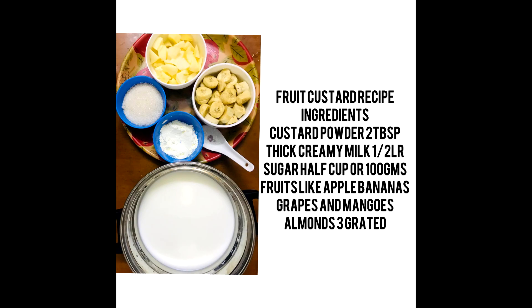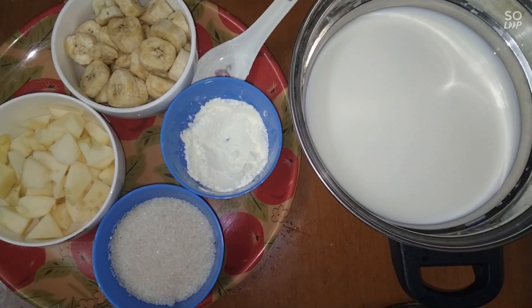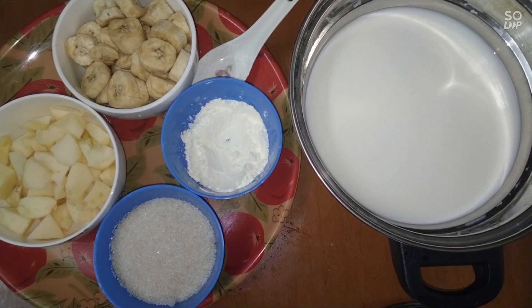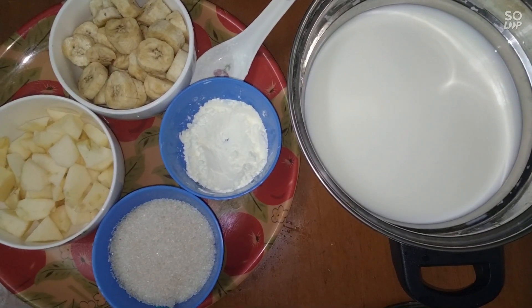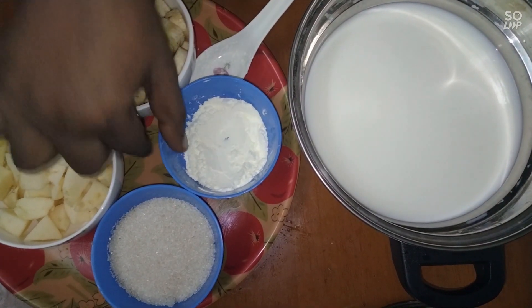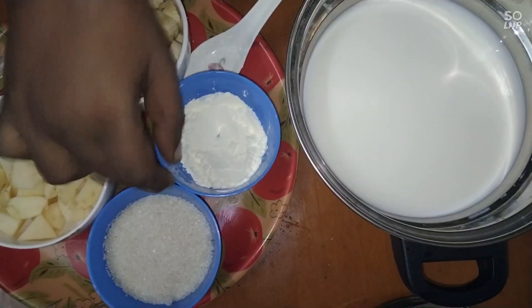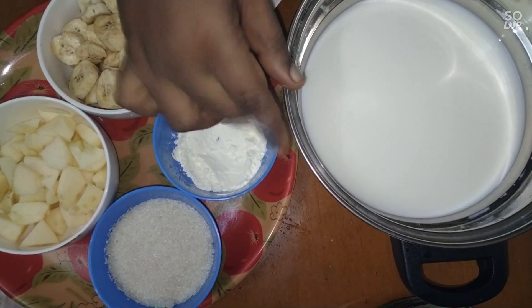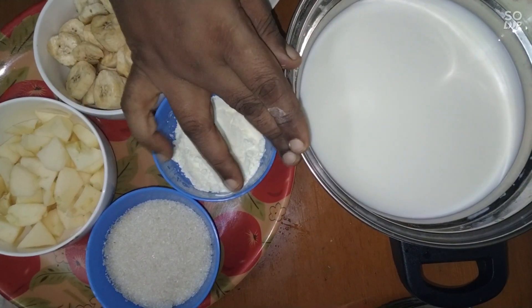We are going to go to the supermarket. Custard is easy to use — you can add 2 tbsp of custard powder. Add a thick, creamy milk, half a liter.